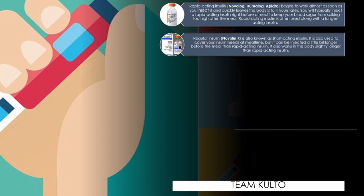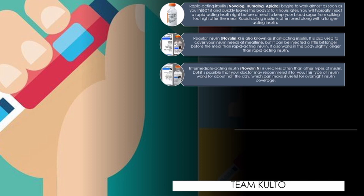Next is regular insulin or short-acting insulin. Regular insulin — Novolin-R — is also known as short-acting insulin. It is used to cover your insulin needs at mealtime, but it can be injected a little bit longer before the meal than rapid-acting insulin. It also works in the body slightly longer than rapid-acting insulin. Next, you have your intermediate-acting insulin — Novolin-N — which is used less often, but it works for about half the day, making it useful for overnight insulin coverage.